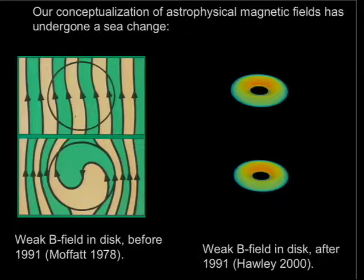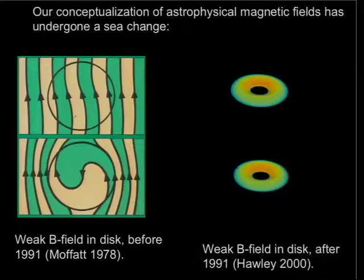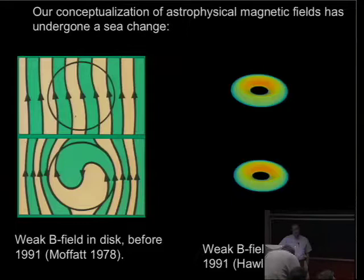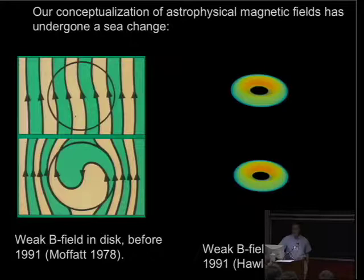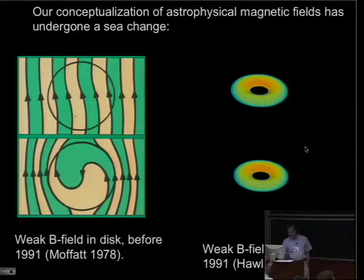As most of you appreciate, our conceptualization of astrophysical magnetic fields has undergone a sea change. Weak magnetic fields used to be wimpy, passive things, as illustrated stylistically from the cover of Keith Moffat's book, where we see the field lines passively being wrapped up by a differentially rotating disk.